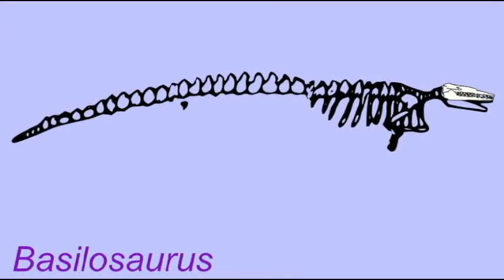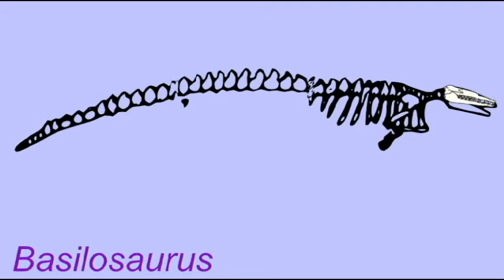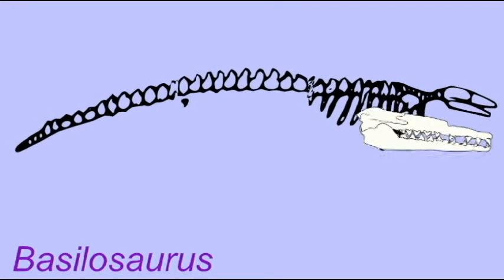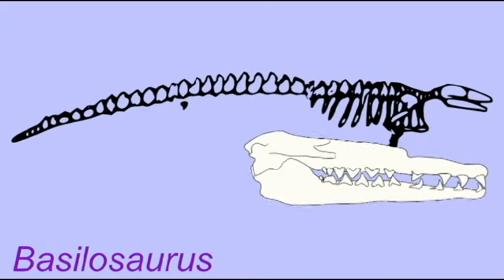Hundreds of specimens of Basilosaurus are known, from Egypt in areas of the Sahara which were once covered by shallow ocean, and the southeastern United States.